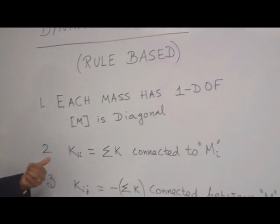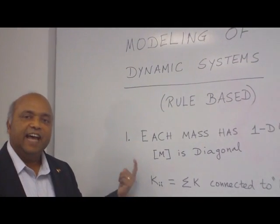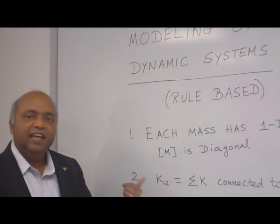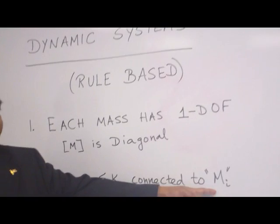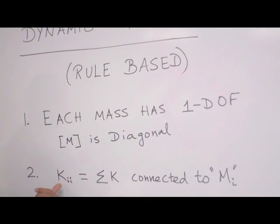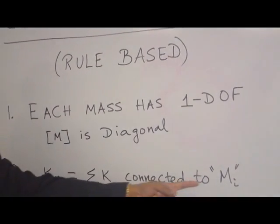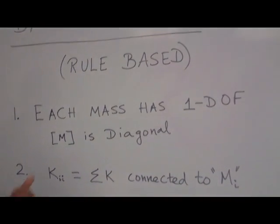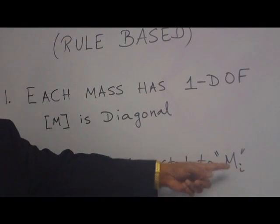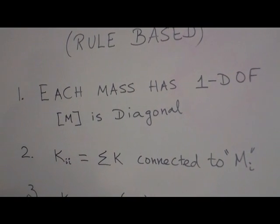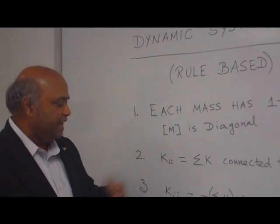And the second rule, the stiffness matrix, KII is a diagonal element of the stiffness matrix is equal to the sum of the stiffness connected to MI. For example, K11 equal to sum of all the stiffness connected to M1, that is mass 1. K55 equal to sum of all the stiffness connected to M5. So each mass, you see what are the stiffness connected, you just add them up. Those form the diagonal element.